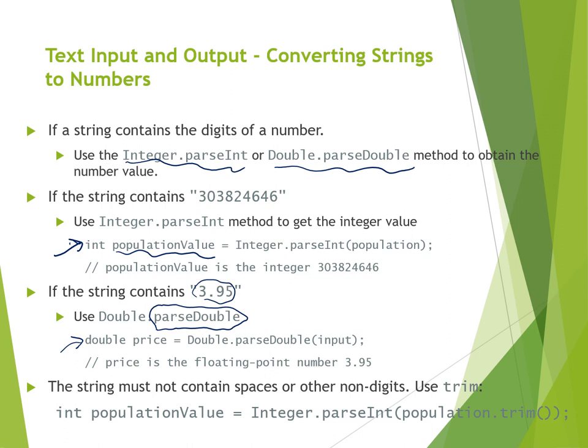It's important to know that the string must not contain spaces or other non-digit characters when passed to the parsing methods. You can use `trim()` before passing the string — for example, `population.trim()` removes spaces from the beginning and end, and then you pass it to `parseInt()` to convert the string into an integer value of the population. Set it equal to `int populationValue`.